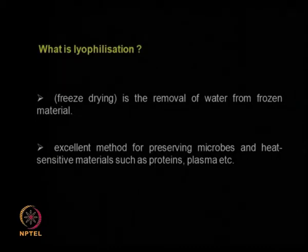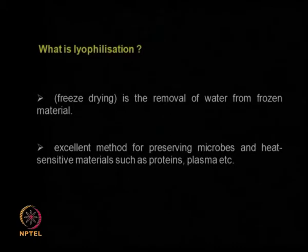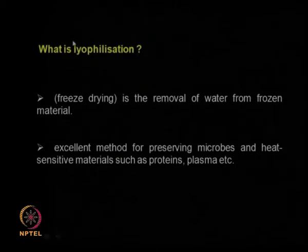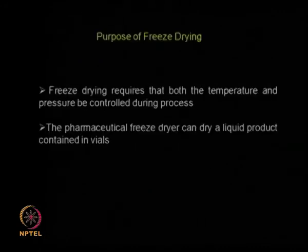In freeze drying, you cool the material sufficiently so that everything gets frozen including the water, and then you reduce the pressure or increase the temperature so that ice directly goes into vapor without becoming liquid. It is a very good method for preserving microbes and heat-sensitive materials such as proteins and plasma — for example, blood plasma.